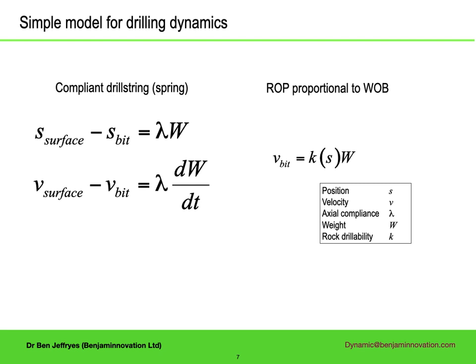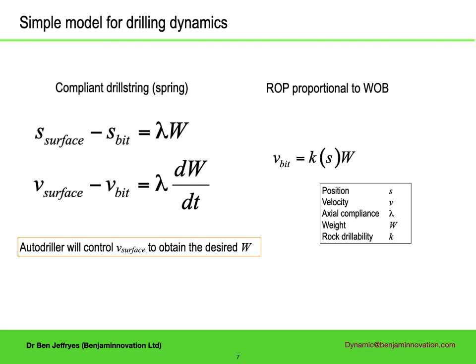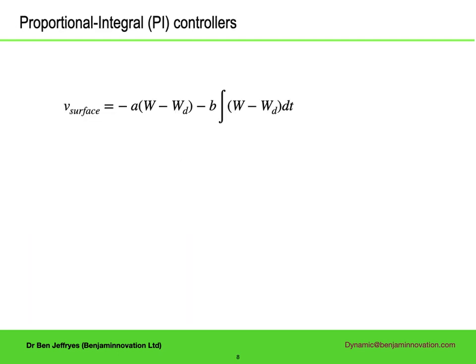Let's revisit the simple axial dynamics. The difference between surface and bit axial velocity is proportional to the rate of change of weight. The bit velocity is proportional to the weight. The autodriller seeks the desired weight by controlling the surface velocity. The way it normally does this is with a proportional integral controller, aiming to get the weight to the desired weight, Wd.